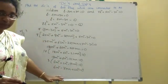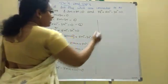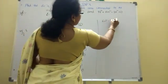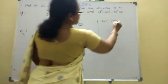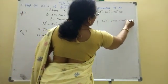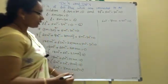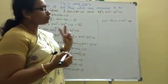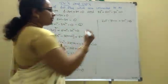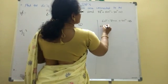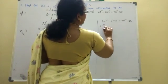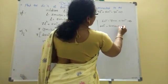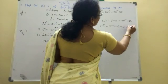Now factoring 6M squared minus 7MN plus 2N squared equal to 0. Since 6 times 2 is 12, and 4 plus 3 equals 7, split the middle term: 6M squared minus 4MN minus 3MN plus 2N squared equal to 0.